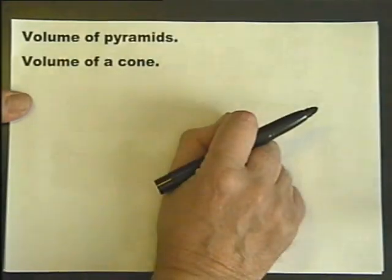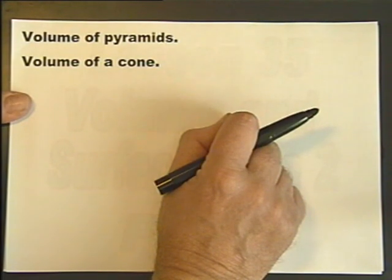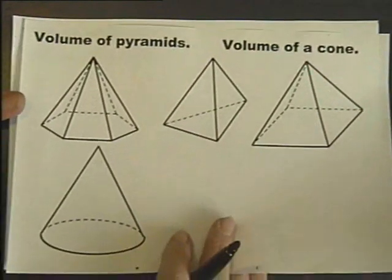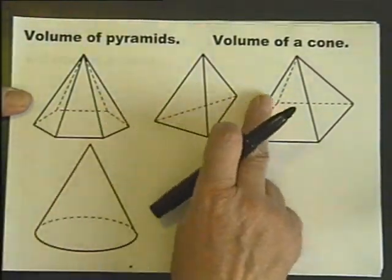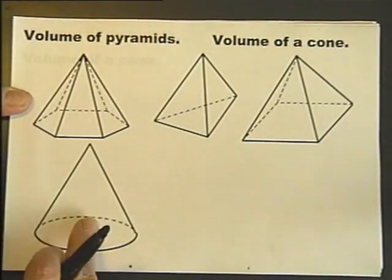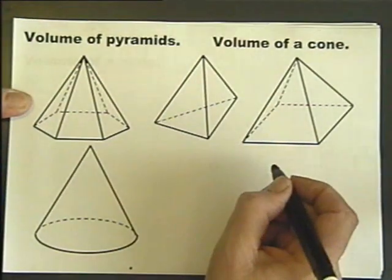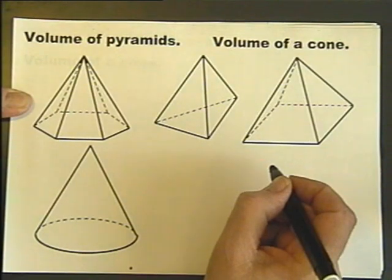And this is going to be about volume of pyramids and the volume of a cone. Now these are all pyramids, including the cone. The cone is just a circular-based pyramid. And they all have the same formula for the volume of them.